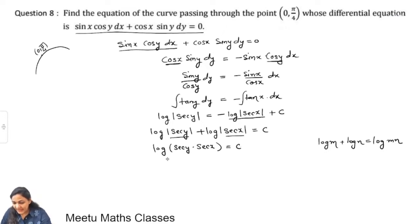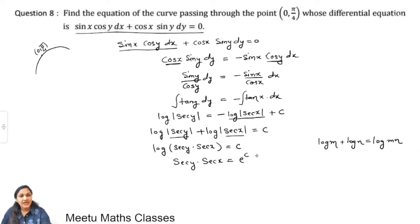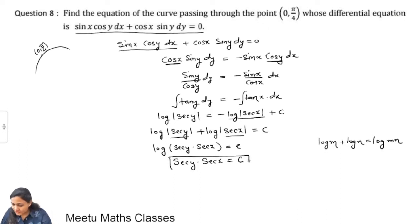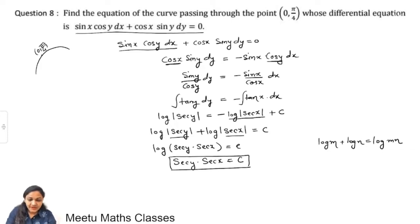Taking exponentials on both sides, we get sec y · sec x = e^c. Since e^c is again a constant, we write it as c. So, sec x · sec y = c is the general solution of the differential equation. But we are interested in the particular solution which passes through (0, π/4).